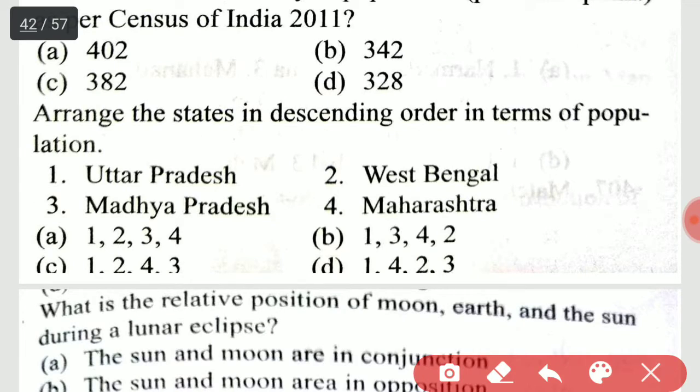The states in descending order in terms of population — the right option is option B.